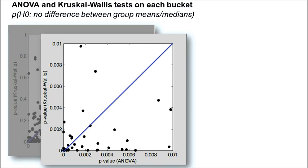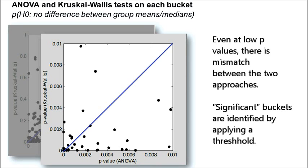This is true also for the small p-values of interest. Furthermore, there are differences in the metabolites highlighted as significant when a threshold is applied.